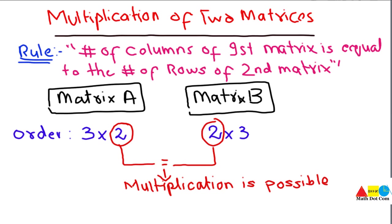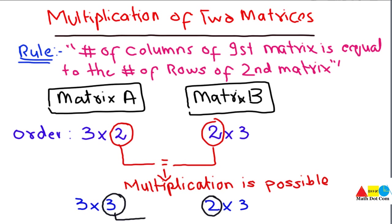In another case, if the order of matrix A is 3×3 and the order of matrix B is 2×3, you check the columns of A and the rows of B — the inner elements. Are they equal? No, 3 is not equal to 2. This means that the multiplication is not possible in this case. This is how you can identify the possibility of multiplication of two matrices.